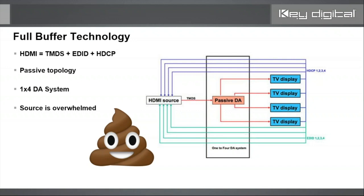This is an old-fashioned splitter — we'll just call it a splitter. We can't even call this a distribution amplifier. This is the golden example, the golden poo emoji — what not to do.